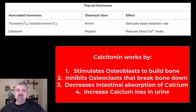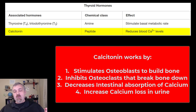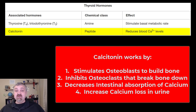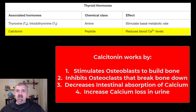The parafollicular cells, or C cells, of the thyroid gland produce a different hormone: calcitonin. When you think thyroid gland, think thyroid hormone, but there's also calcitonin. Calcitonin's job is to decrease blood calcium levels. This hormone is especially important when we're young — it increases the activity of osteoblasts, the cells that build bone, taking calcium from body fluids and putting it into bones. It inhibits osteoclasts that break down bone, which is why when you're younger you build more bone than you break down, reaching peak bone density somewhere between age 14 and the early 20s. Calcitonin also decreases calcium absorption in the intestines and increases calcium loss in urine.